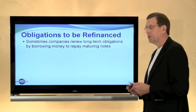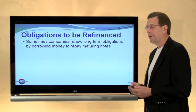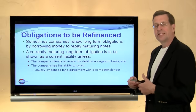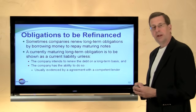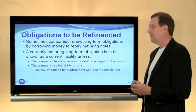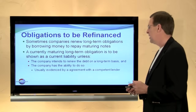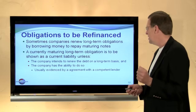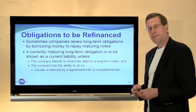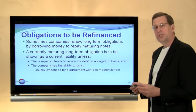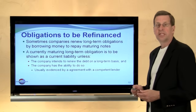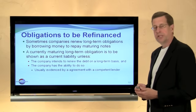These amounts should be shown as a current liability for the year prior to their due date, unless there is an intent and an ability to refinance on a long-term basis. A currently maturing long-term obligation is to be shown as a current liability unless the company both intends to renew the debt on a long-term basis and has the demonstrated ability to do so, which is usually evidenced by some firm agreement from a competent lender that's able to execute on their part of the transaction.